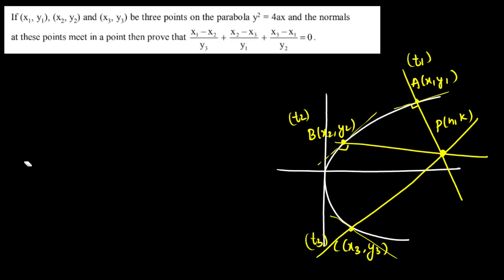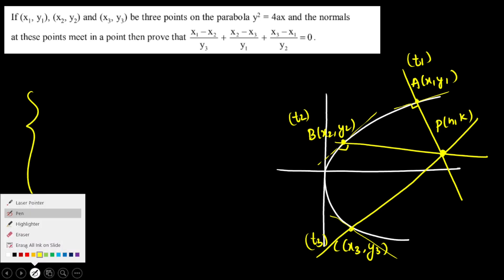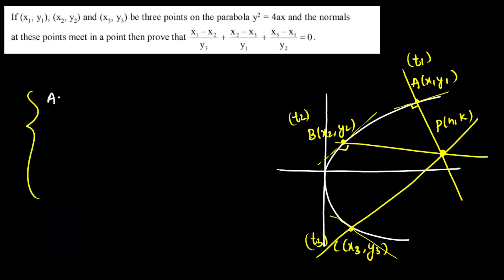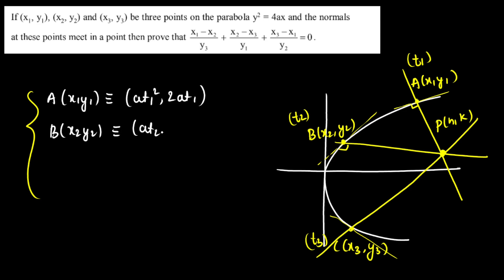So we have three points. The first point is (x1, y1), and parametrically this is (at1², 2at1). Similarly, point B is (x2, y2), that is (at2², 2at2). Similarly, I can write point C, that is (x3, y3), as (at3², 2at3).